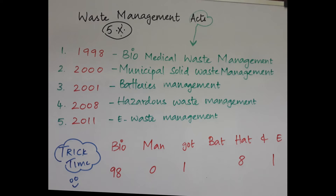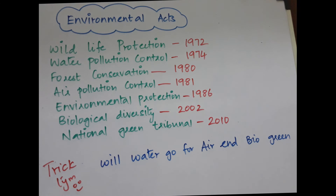To remember the years: 98, then 0, 1, 8, 1 — meaning 2000, 2001, 2008, and 2011. So: 98, 00, 01, 08, 11 — BIOMAN GOT BAT HAT AND E. Next, we'll move on to environmental acts.